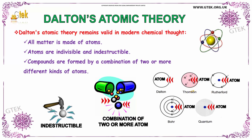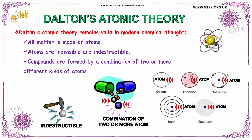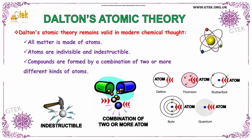You can see the Thomson model, in which all atoms are made up of electrons. In the Rutherford model, you have a center nucleus with electrons surrounding it. The Bohr model introduced orbitals, and each atom has a quantum energy level, as given by the quantum model.